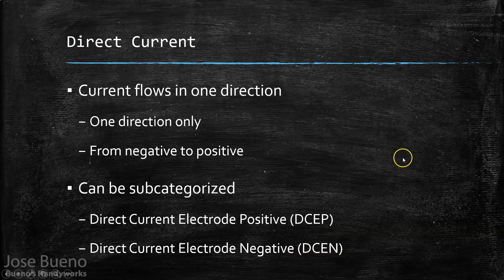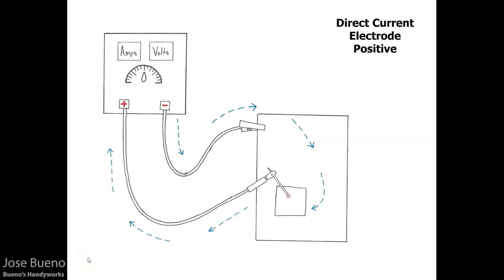We're going to start by discussing direct current electrode positive. Let's identify some of the objects in our diagram. Starting in the upper left, this object represents a welding machine. We see a screen that reads out our amperage, another readout for voltage, and a dial that allows us to set our variables. Then we have a terminal labeled positive and another terminal labeled negative.